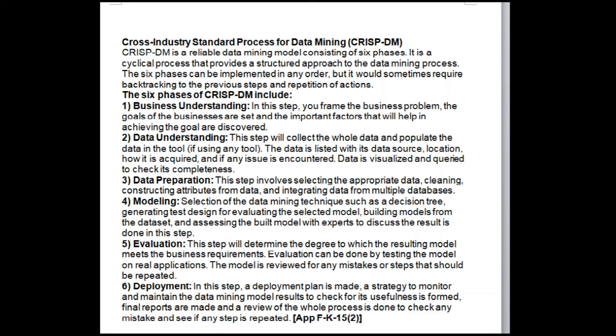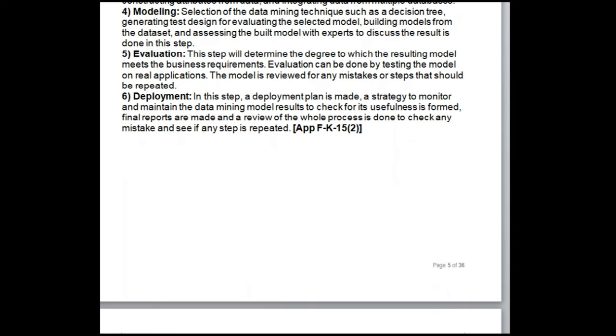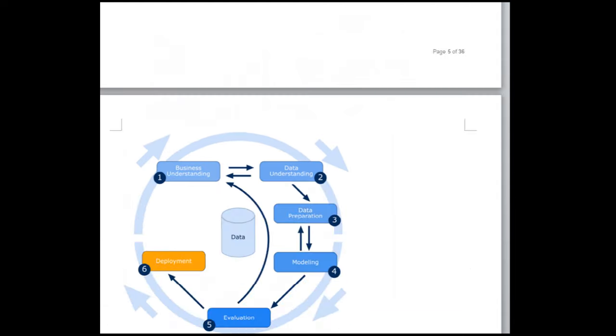Phase 5 is Evaluation — determining the degree to which the resulting model meets the business requirements. Evaluation can be done by testing the model on real applications, and the model is reviewed for any mistakes or steps that should be repeated. Phase 6 is Deployment — making a deployment plan, forming a strategy to monitor and maintain the model, preparing final reports, and reviewing the whole process to check for mistakes.